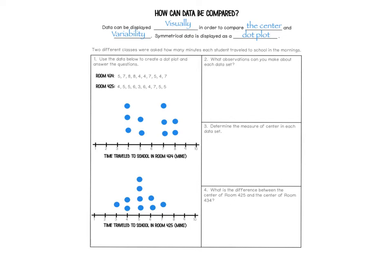Question two says: what observations can you make about each data set? By looking at the graph, I can see that room 425 has a peak at 5 minutes, meaning that it goes up much higher than the rest. And room 434 is more condensed, meaning that all the data is close together and none of the values is much higher than the others.